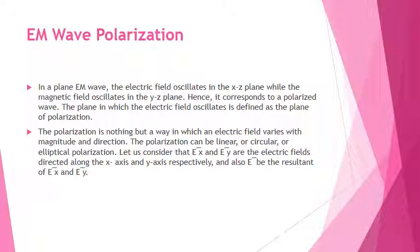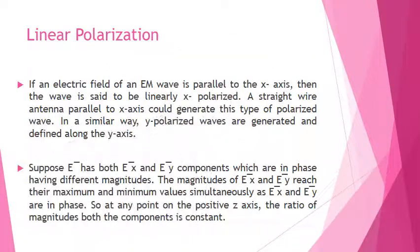Let us consider that EX and EY are the electric fields directed along the X and Y axis respectively. Linear polarization can be defined as when an EM wave is parallel to the X axis, then the wave is said to be linearly X polarized. A straight wire antenna parallel to X axis could generate this type of polarized wave.